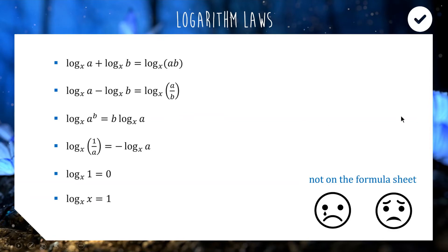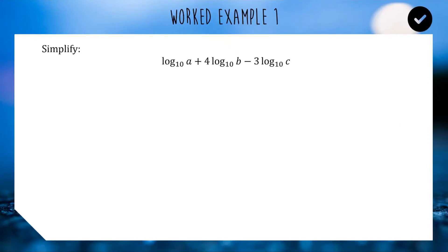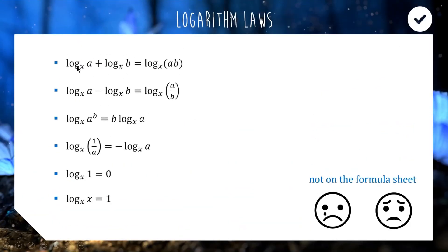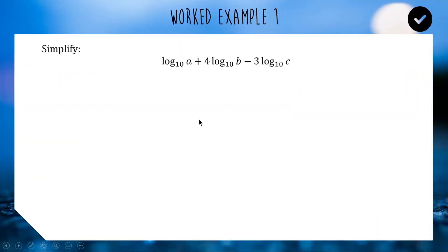Our first example: simplifying log base 10 of a plus 4 log base 10 of b minus 3 log base 10 of c. When we have multiple logarithm terms and we're asked to simplify, we're trying to combine them together using those properties. First, notice that the properties don't have numbers out the front of the logarithms. So the 4 in front of log base 10 of b and the 3 in front of log base 10 of c need to be moved before we can combine things.